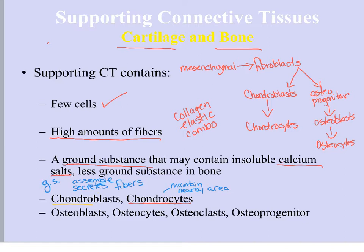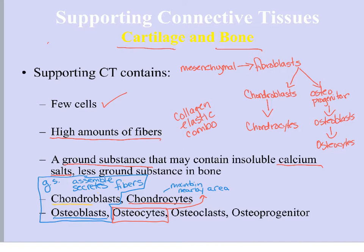In bone, osteoblasts are going to assemble and secrete the fibers and create the ground substance — they do the same things as chondroblasts, just in a different tissue type. Those osteoblasts are immature bone cells that differentiate into osteocytes, the mature bone cells. Osteocytes do the same thing as chondrocytes: they just maintain the area around them in mature bone. Osteoprogenitor cells are the precursor to osteoblasts — you need to recognize that osteoprogenitor cells differentiate into osteoblasts.